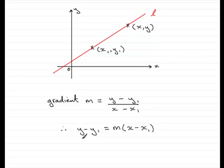And this equation here is often referred to as the equation of a straight line passing through a given point, x₁, y₁, with gradient m.